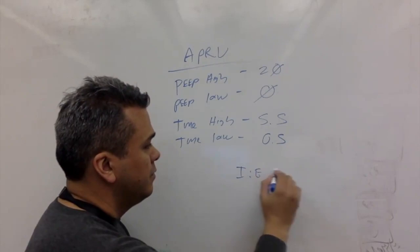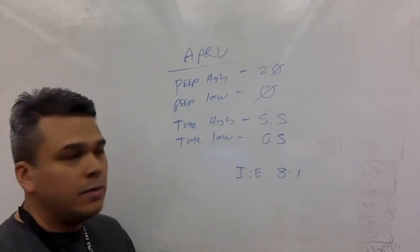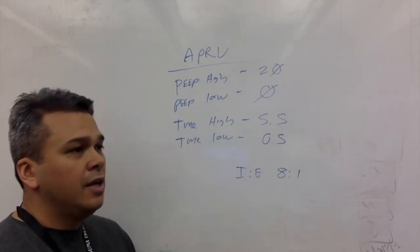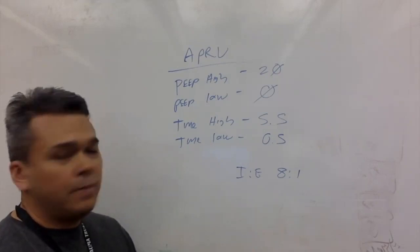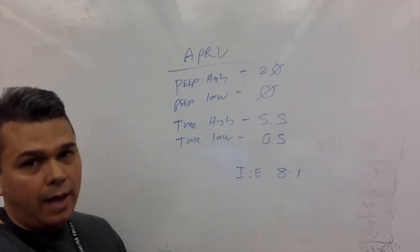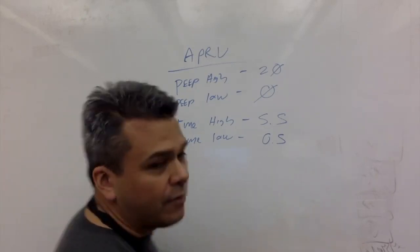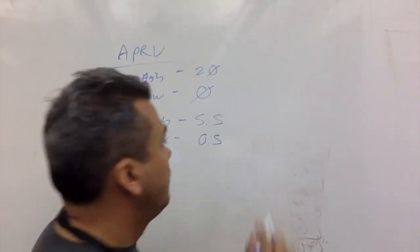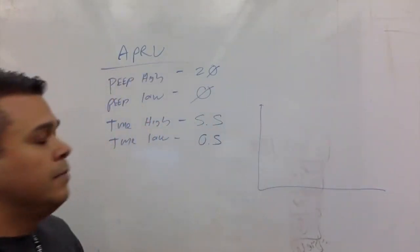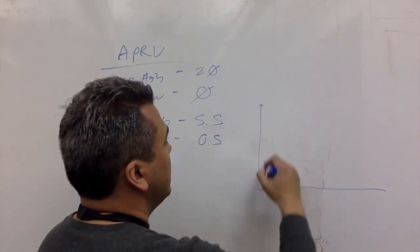Time low is going to be usually under a second. This works out to about an I to E ratio probably 8 to 1, which sounds uncomfortable, but this isn't like the old days where we'd put inverse ratio on an assist control patient and have to paralyze them. This is spontaneous breathing and I'll show you where this 8 to 1 happens, so it's not going to look too extreme. Now we have our waveform, so a little bit different from assist control.